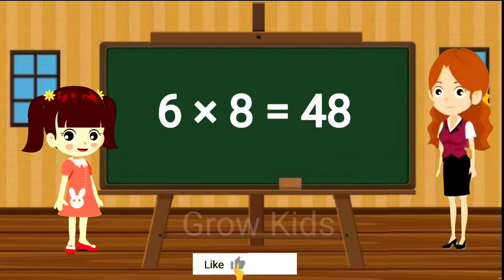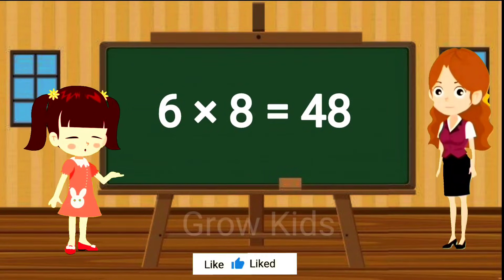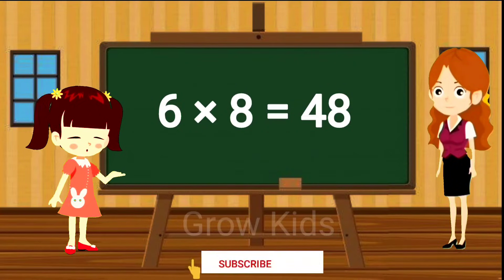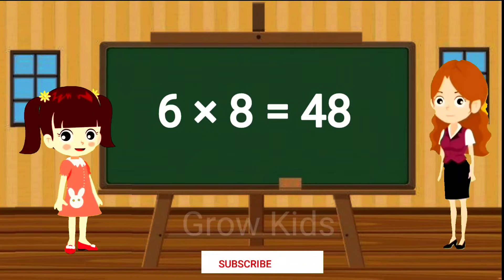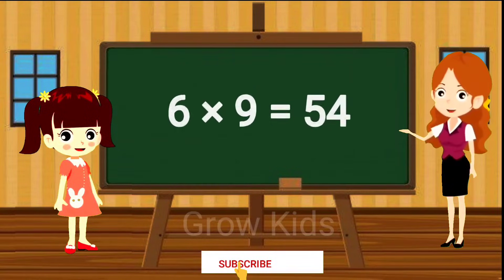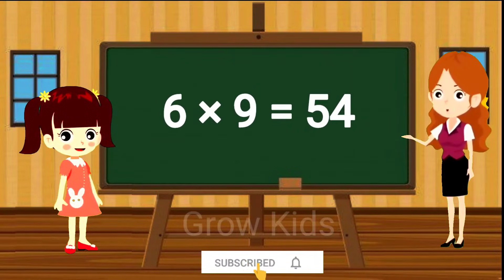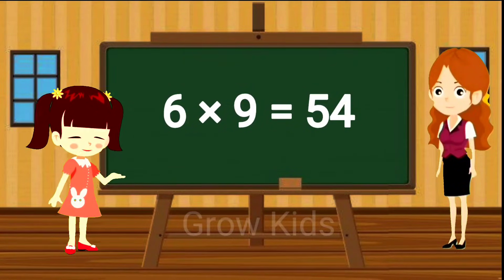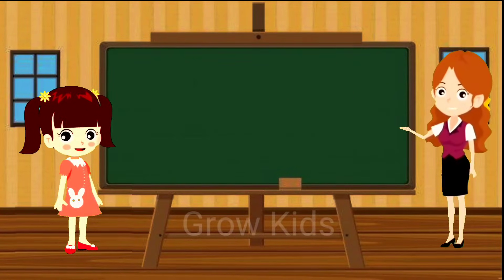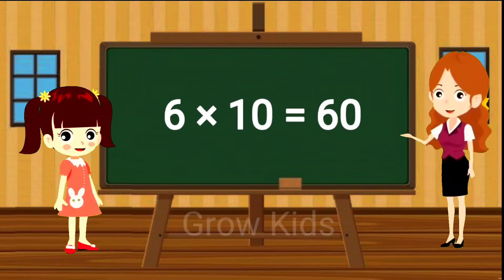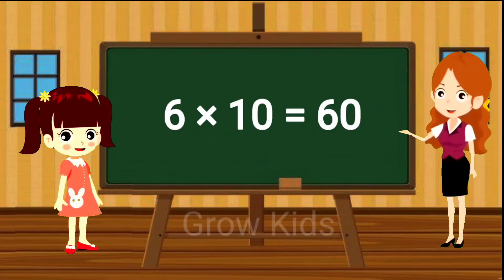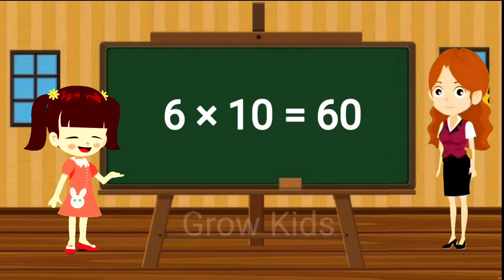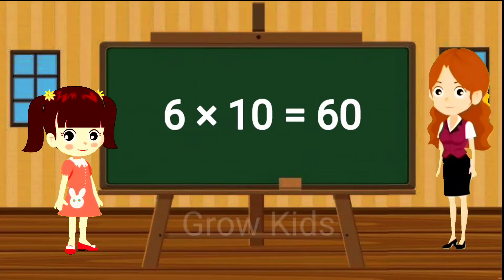Six sevens are forty-two. Six eights are forty-eight. Six nines are fifty-four. Six tens are sixty.